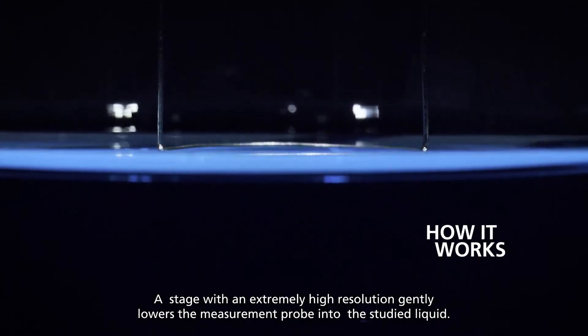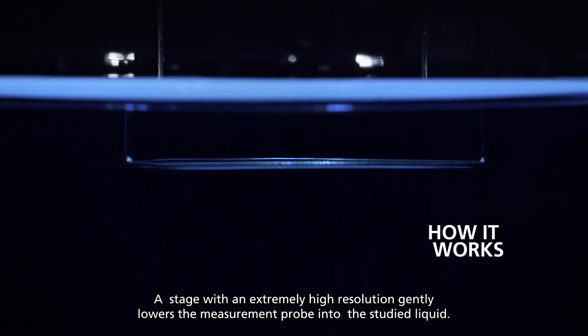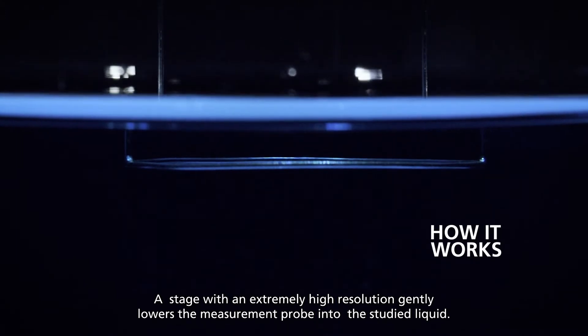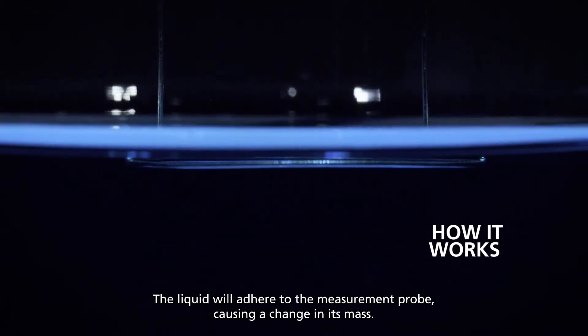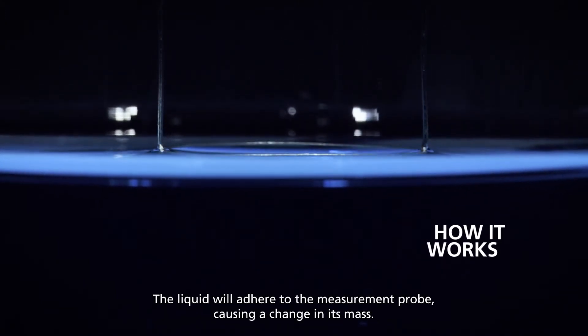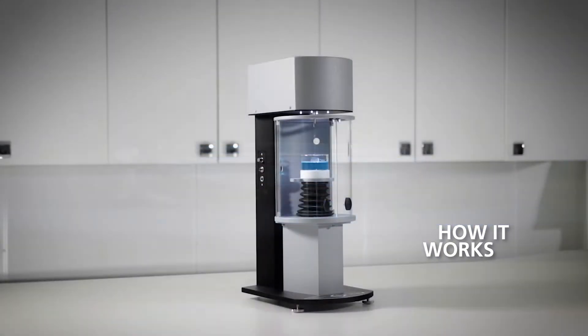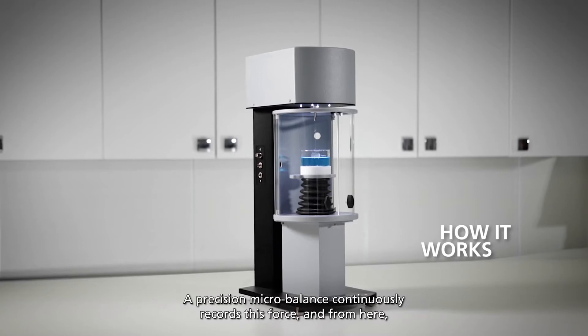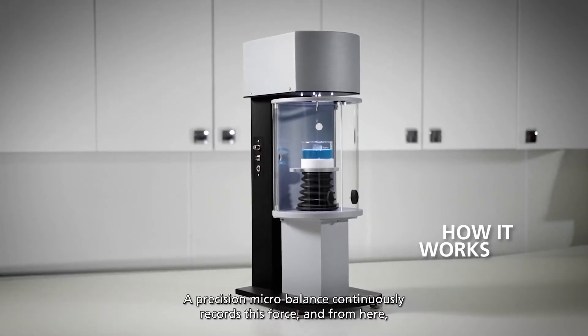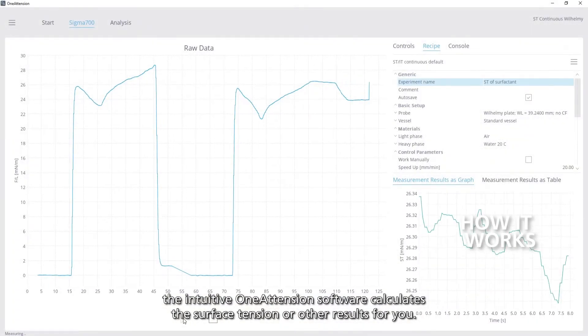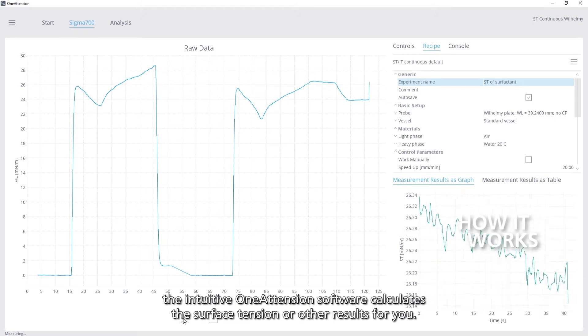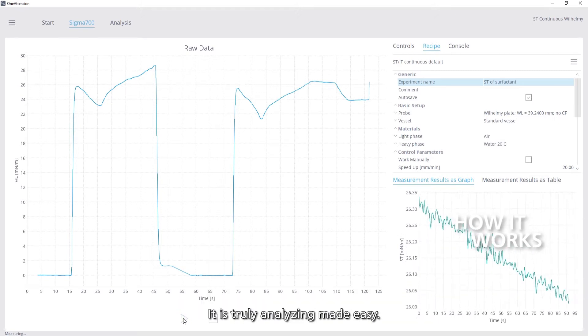A stage with extremely high resolution gently lowers the measurement probe into the studied liquid. The liquid will adhere to the measurement probe, causing a change in its mass. A precision microbalance continuously records this force, and from here the intuitive ATTENSION software calculates the surface tension or other results for you. It is truly analyzing made easy.